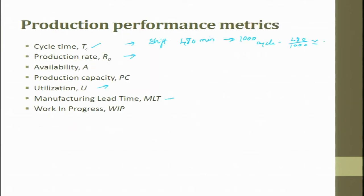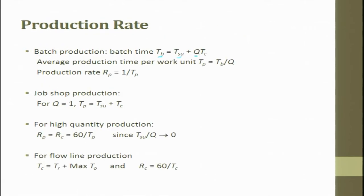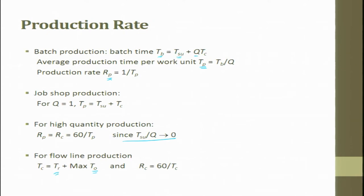Production rate RP = 1/TP. For job shop production, Q is 1, so TP = T_SU + TC. For higher quantity production, RP = RC × 60 / TP, since T_SU / Q tends to 0. For flow line production (assembly line), TC = TR + M × TO, where TO is the maximum processing time and TR is the transfer rate. RC = 60 / TC gives the production rate.